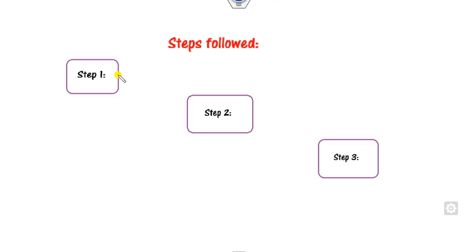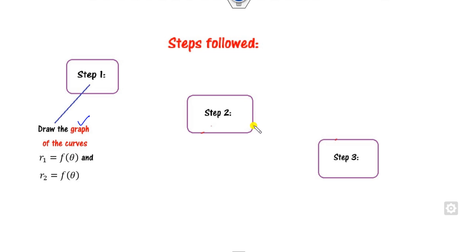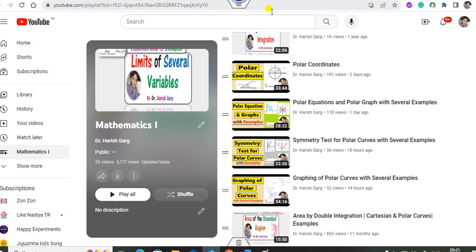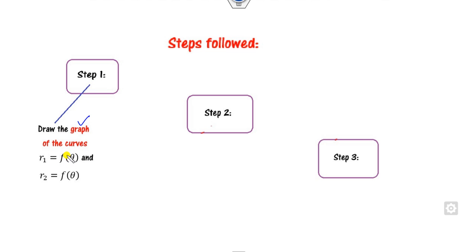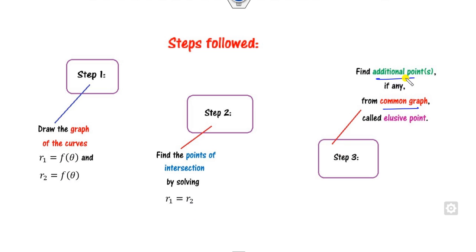I will tell you the three-step rule — one of the easiest ways you can find this. Step 1: always draw the graph of the curves. Step 2: find the point of intersection by equating the two equations, that is r₁ and r₂, and find the value of θ. Step 3: once you draw the graph, find the common points and the elusive points. Elusive points are those points not obtained from Step 2.